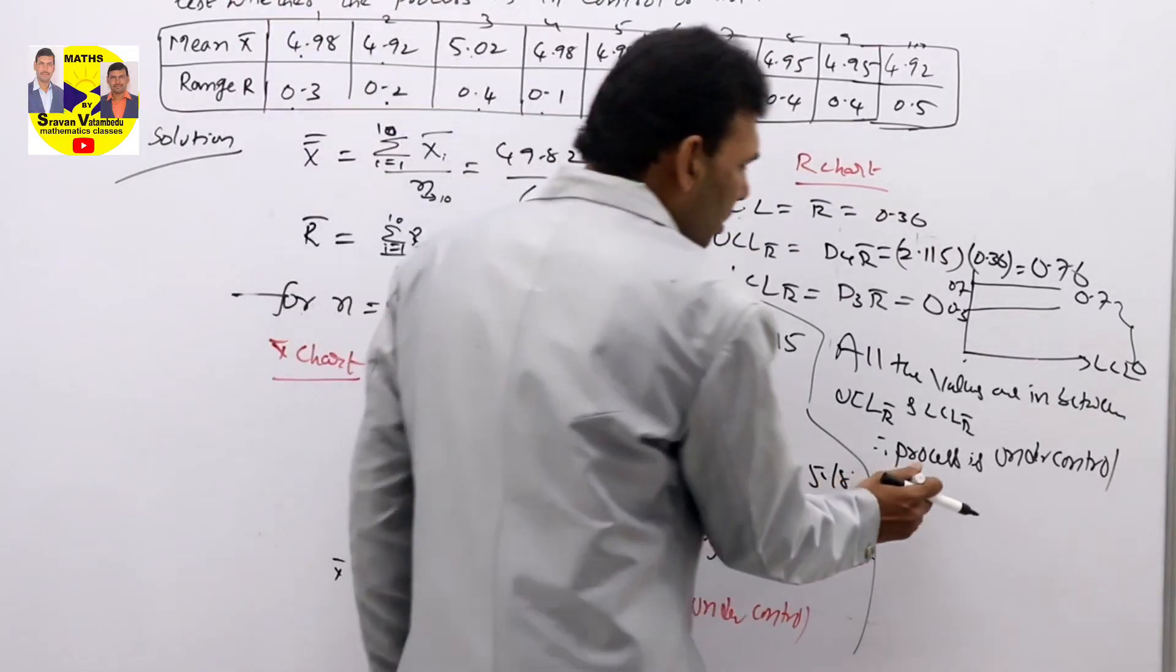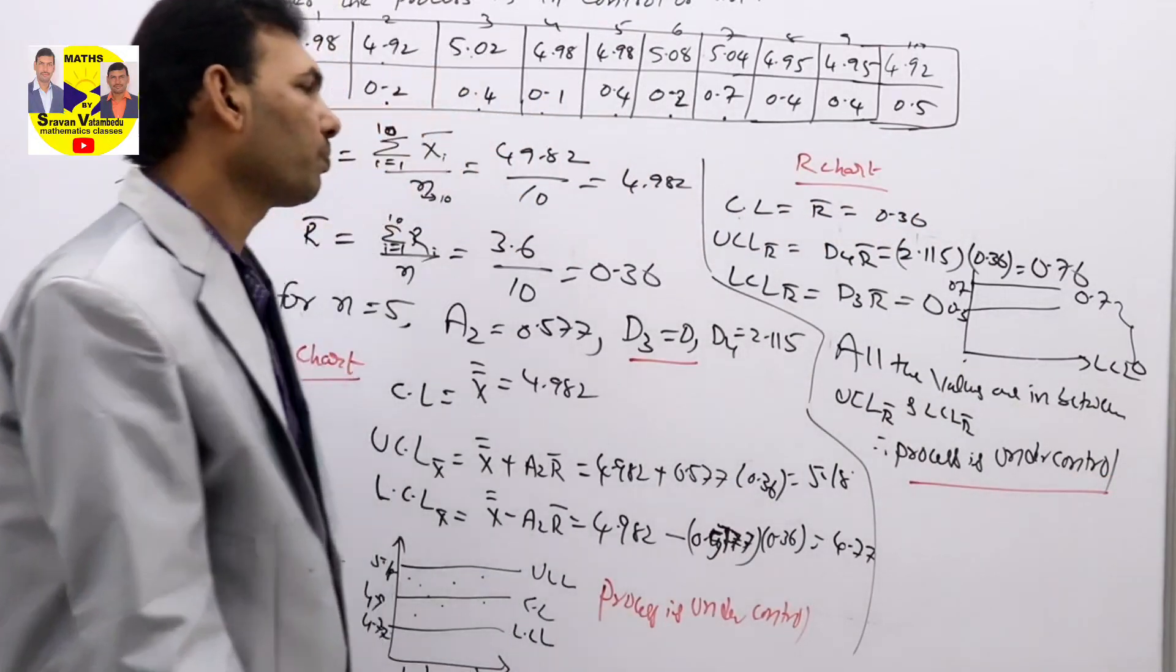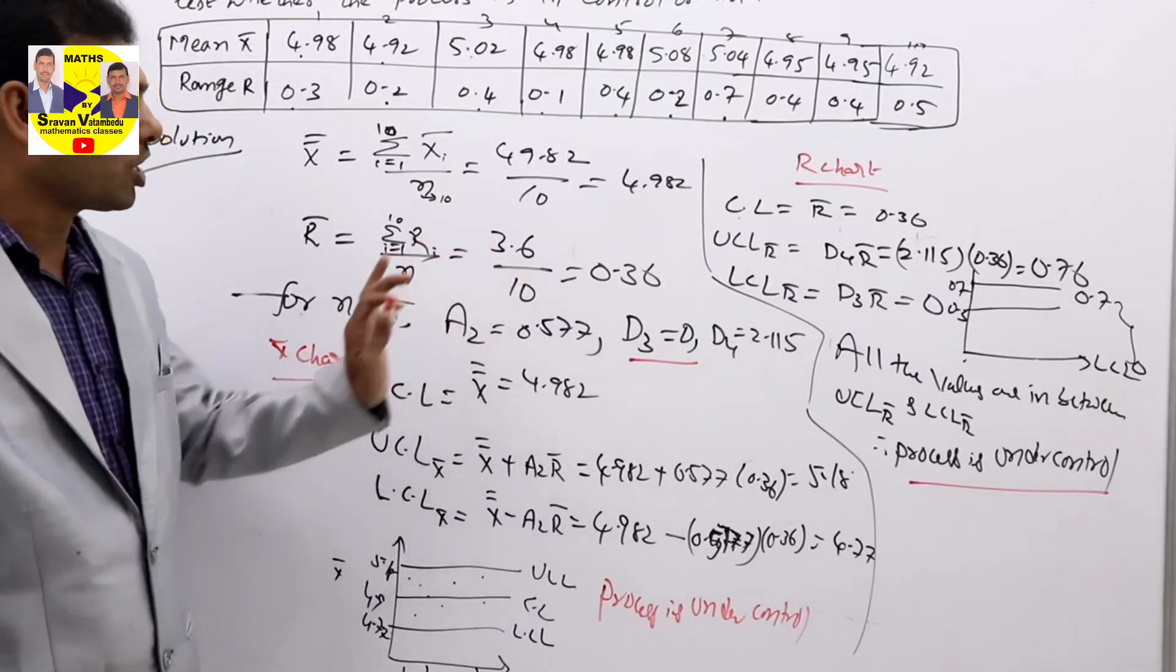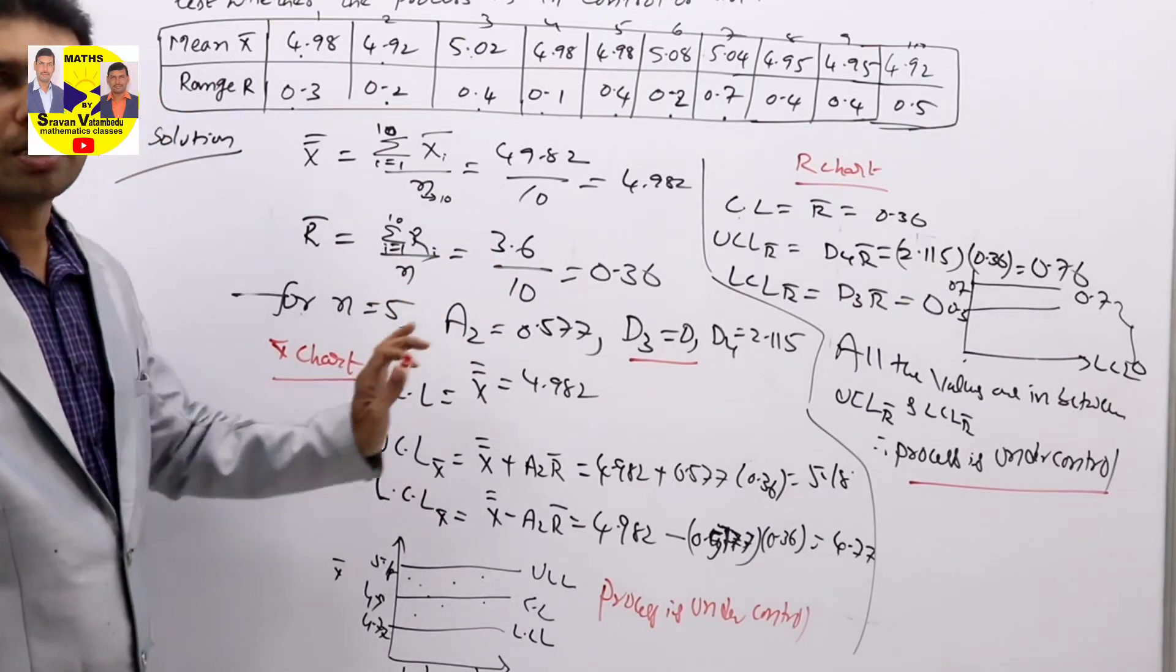So in both the charts, process is under control. In which we are going to discuss both the charts: mean chart and range chart.